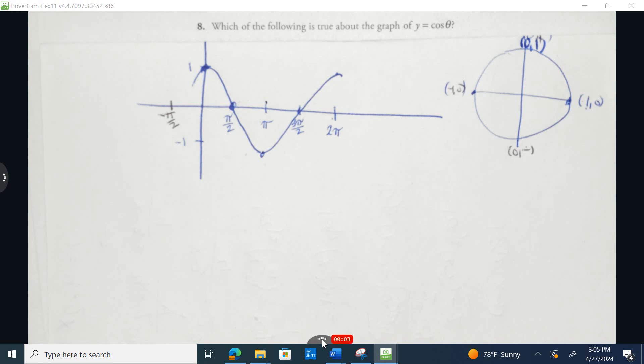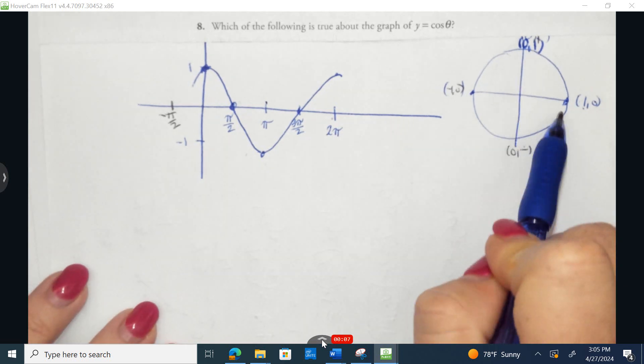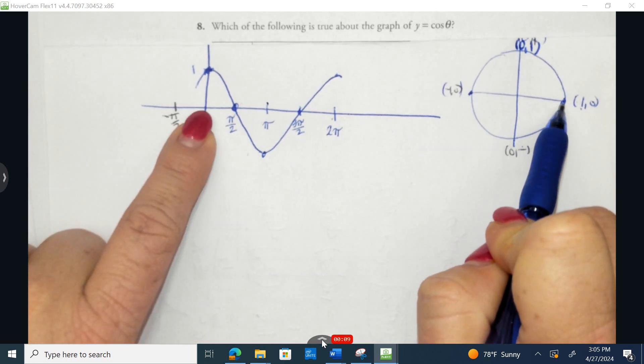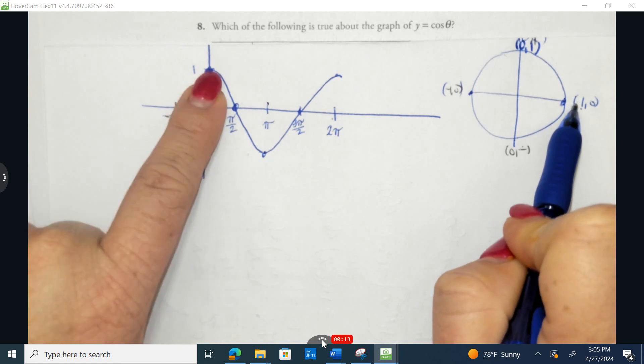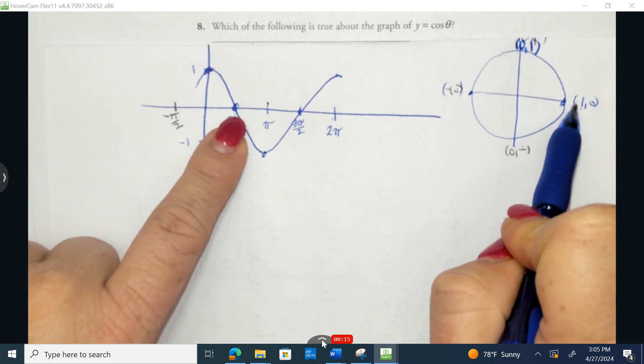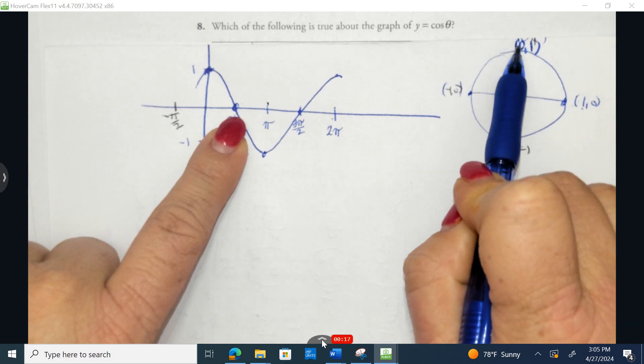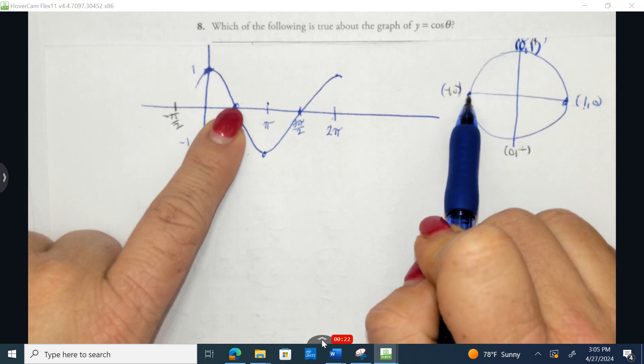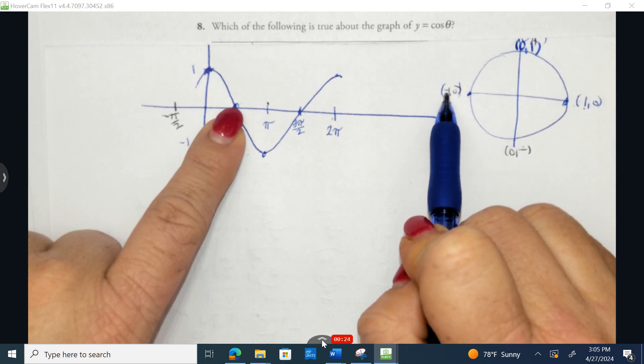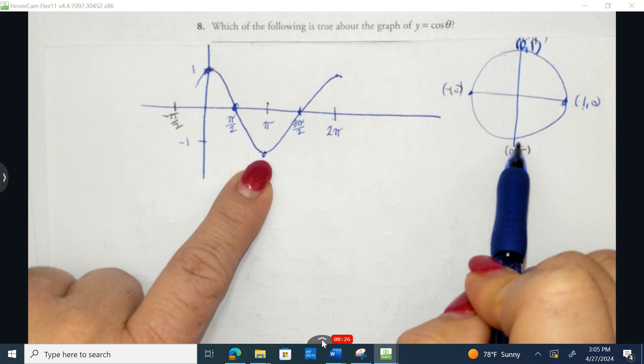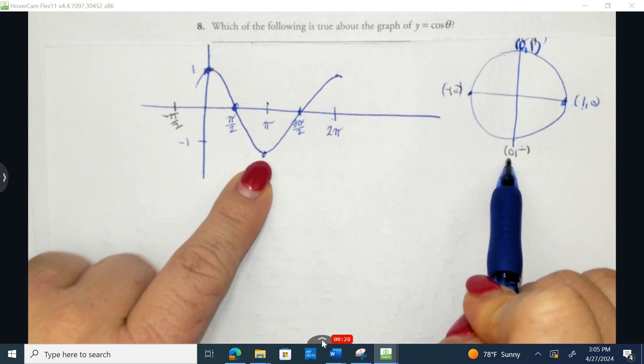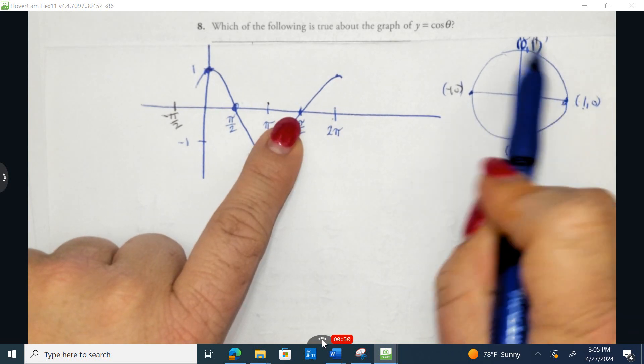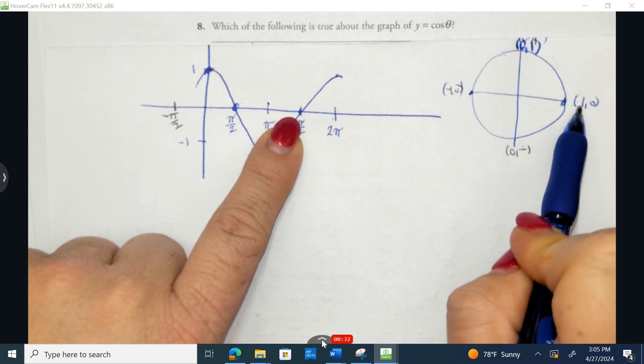To answer number 8, let's start by just graphing y equals the cosine of theta. So I'm starting here at 0, my input is 0, and my output for cosine is 1. Then I go to pi over 2, and my output for cosine is 0. Then I go to pi, and the output for cosine is negative 1. At 3 pi over 2, the output is 0, and we finalize 1 revolution back to 2 pi, and the output is 1.